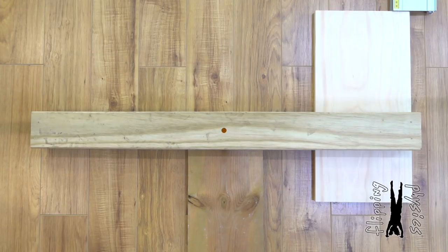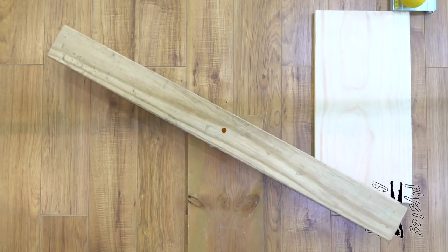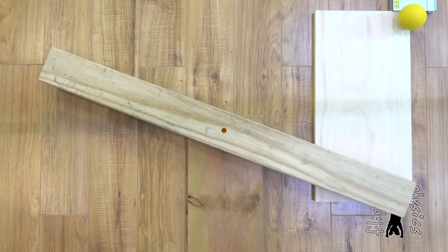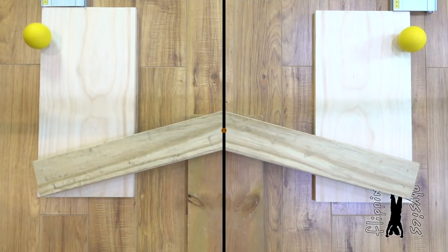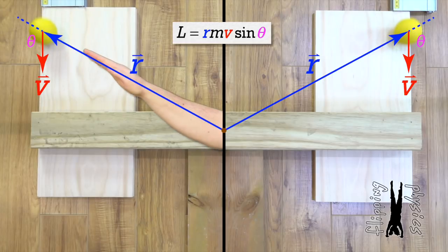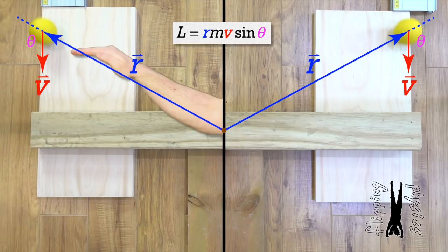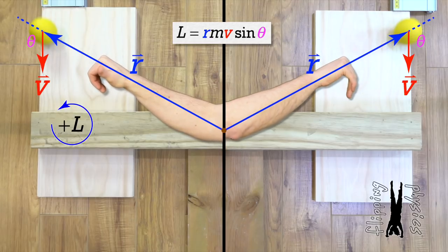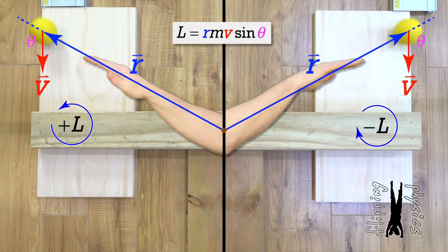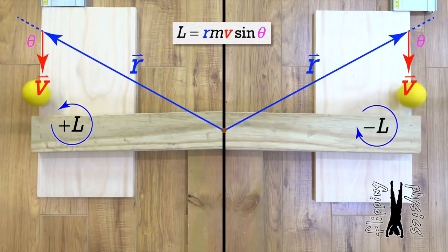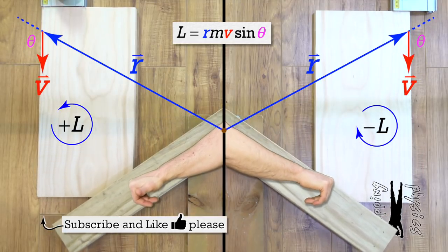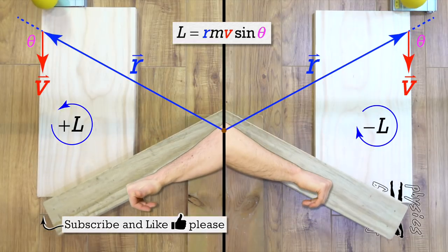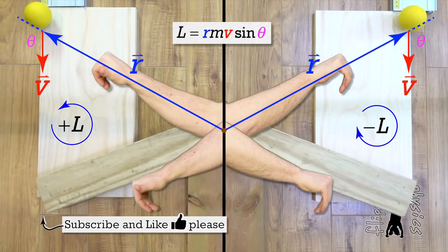One last piece: notice what happens if the point particle collides with the board on the other side of the axis of rotation — the board will rotate in the opposite direction. Angular momentum is a vector, so it has direction. We still use the right-hand rule to determine the direction of angular momentum. If you point the fingers of your right hand in the direction of the r vector, curl your fingers in the direction of the velocity, and stick out your thumb, the ball on the left has angular momentum out of the screen before the collision, and the ball on the right has angular momentum into the screen. The angular momentum of each rotating board after the collision matches the direction of the angular momentum of the ball before the collision. Thank you for learning with me today.